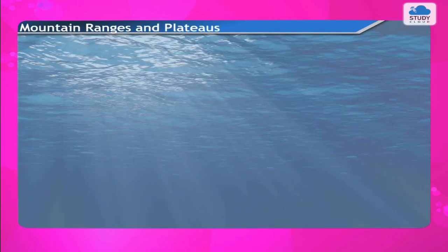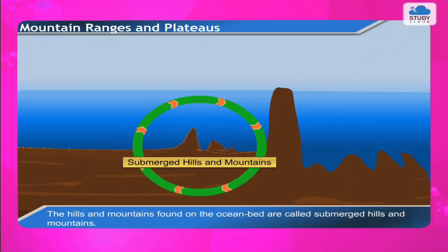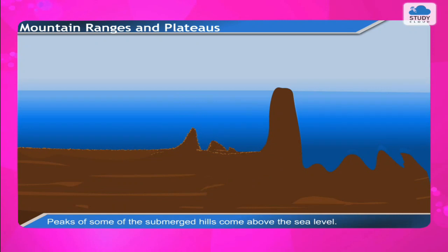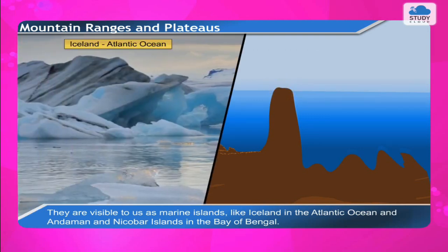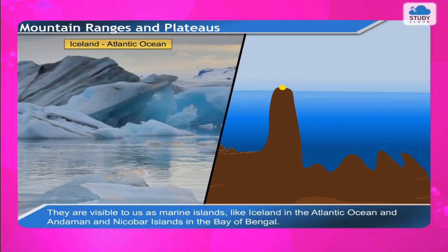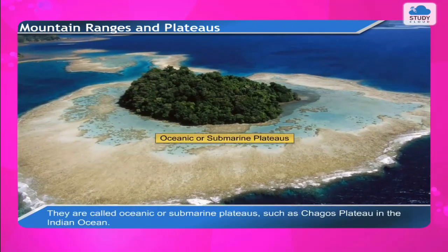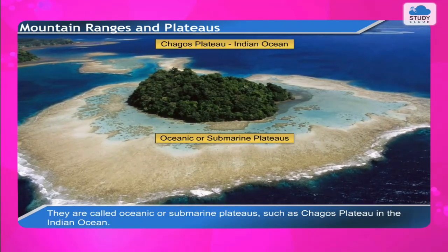The hills and mountains found on the ocean bed are called submerged hills and mountains. These hills are hundreds of kilometers wide and thousands of kilometers long. Peaks of some submerged hills come above the sea level and are visible as marine islands, like Iceland in the Atlantic Ocean and the Andaman and Nicobar Islands in the Bay of Bengal. Summits of some marine islands that are flat and extensive are called oceanic or submarine plateaus, such as the Chagos Plateau in the Indian Ocean.